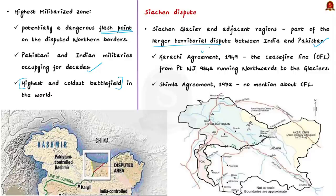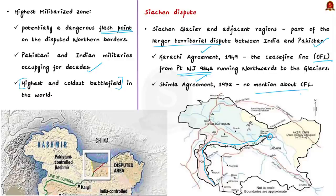The Karachi Agreement of 1949 and the Shimla Agreement of 1972 have left the status of the Indo-Pak boundary vague — there is no clear demarcation north of the point NJ 9842. According to the Karachi Agreement, the ceasefire line will run from this point northwards to the glaciers. But the Shimla Agreement does not even talk about it, so this gave rise to confusion about where the ceasefire line is actually situated.